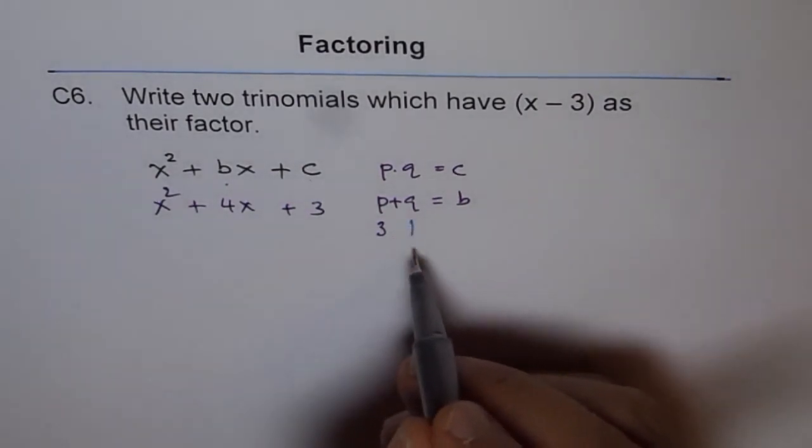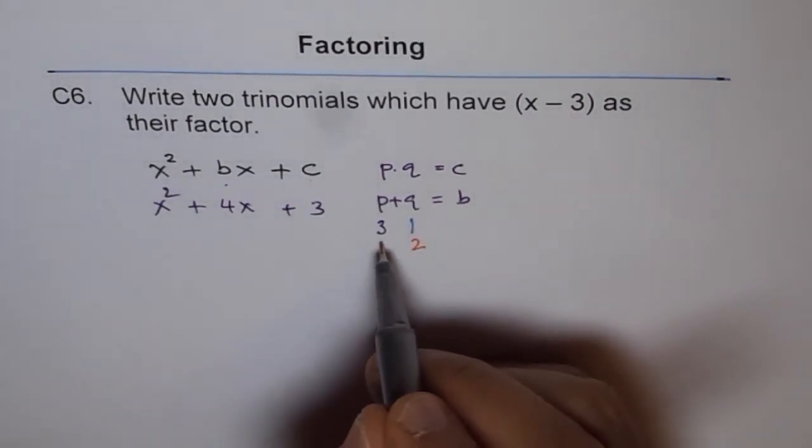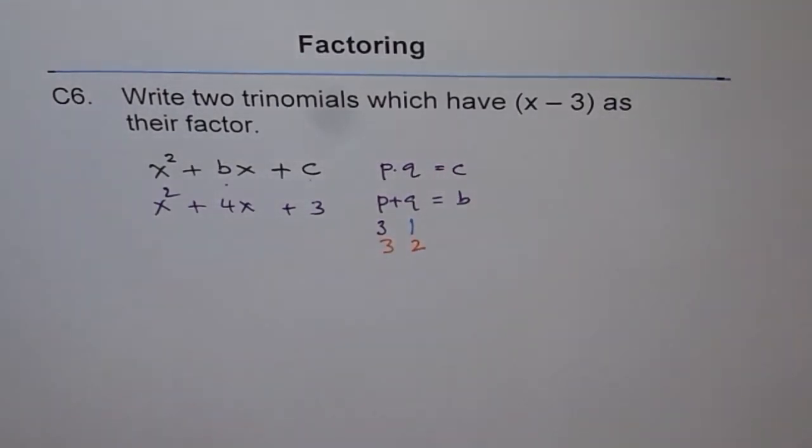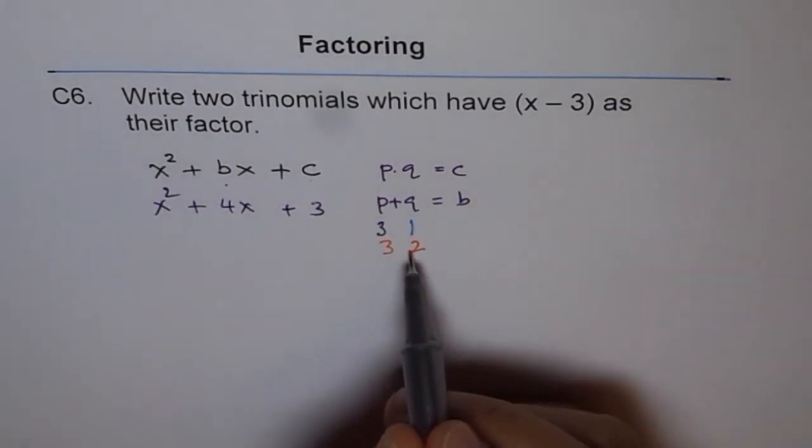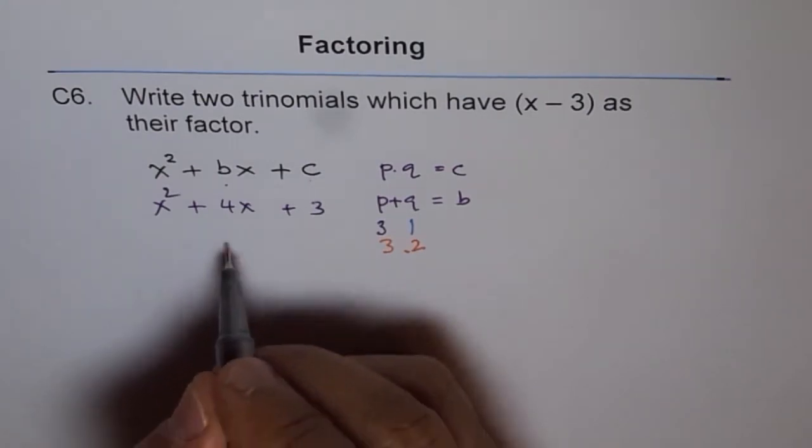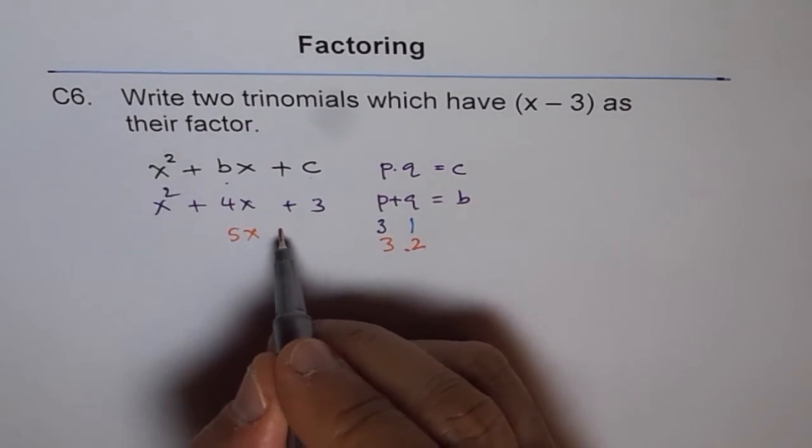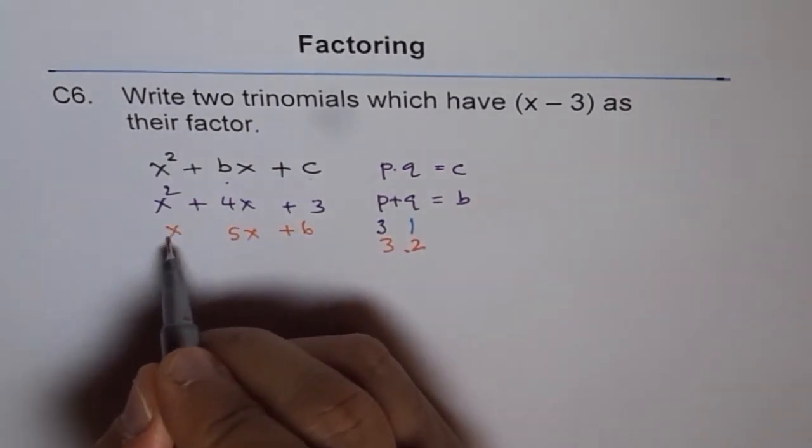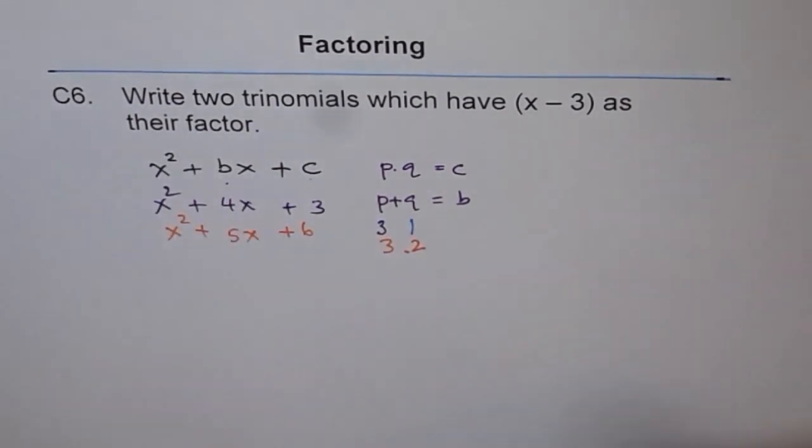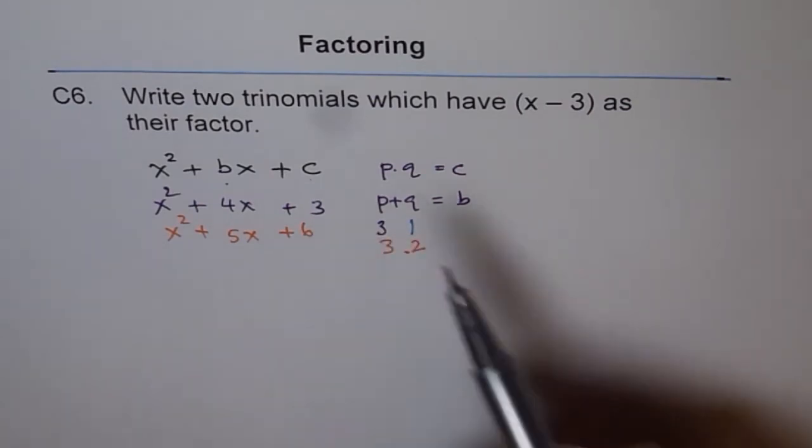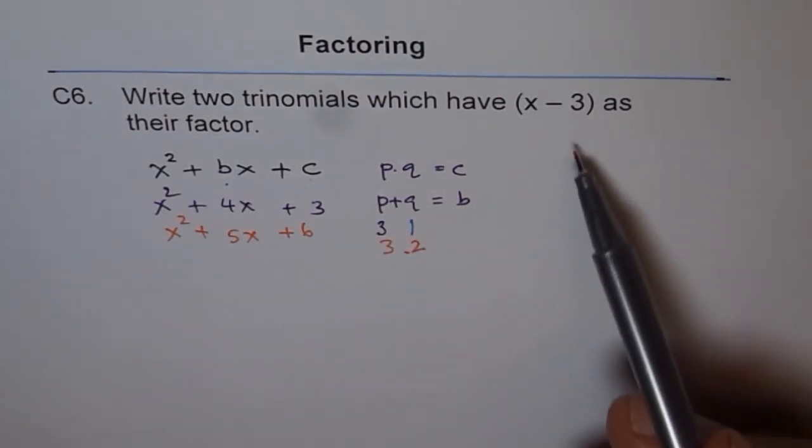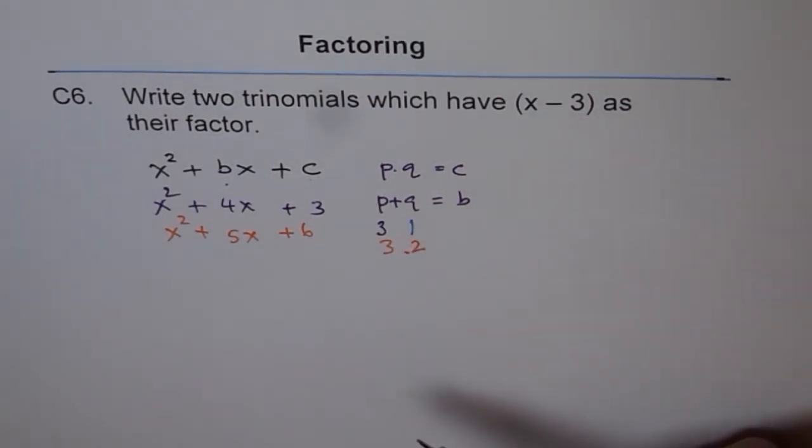Or if we assume q as, let us say 2, so we have 3 here. 3 and 2. In that case, 3 plus 2 is 5, so b is 5, so we get 5x here. And 3 times 2 is 6, so we'll write plus 6. And we have x squared. So like this, we can make infinite number of trinomials, whose one of the factors is 3.